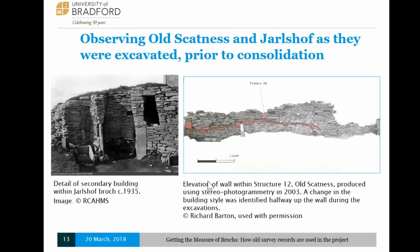I'm also looking at how the sites looked when they were being excavated. I found some quite interesting information — for example, at Structure 12 at Old Scatness while it was being excavated, a researcher called Richard Barton looked at the stonework and produced some stereometric interpretations of the site. He noticed that the stonework and building style changes halfway up the wall, which is something I'll be wanting to look into further.